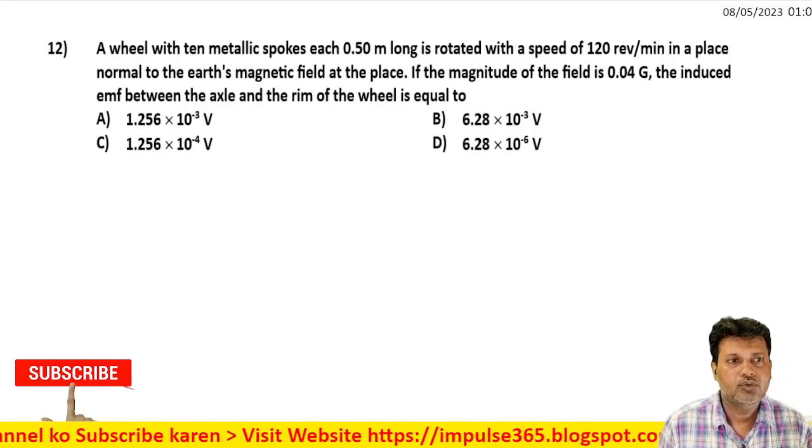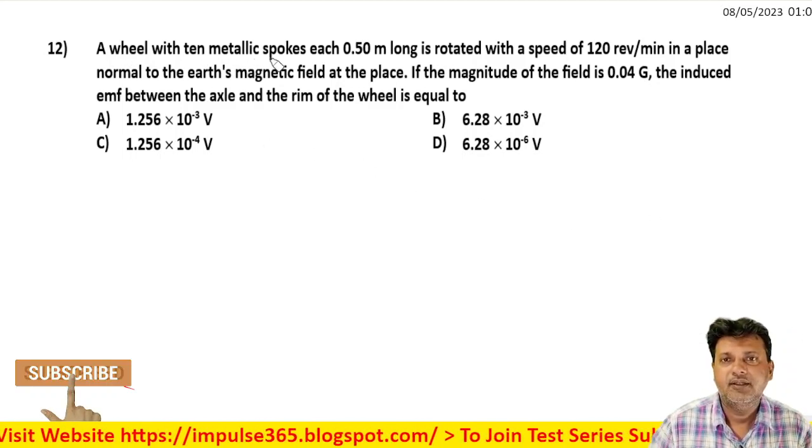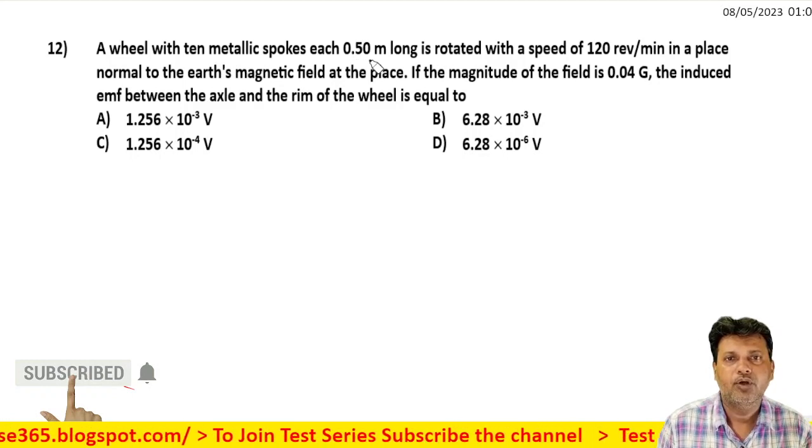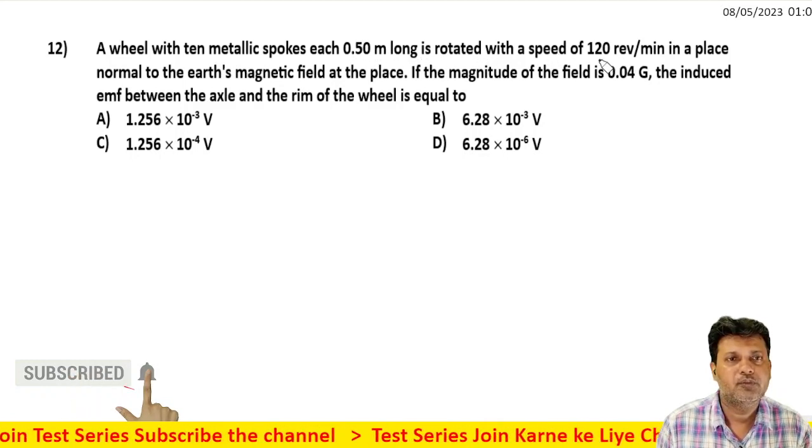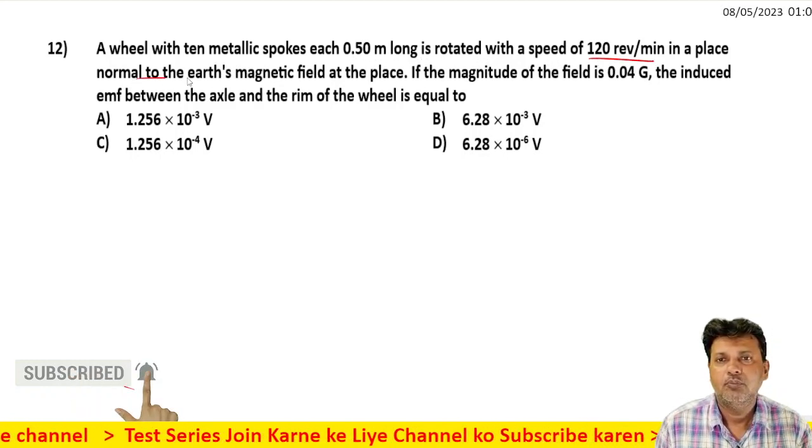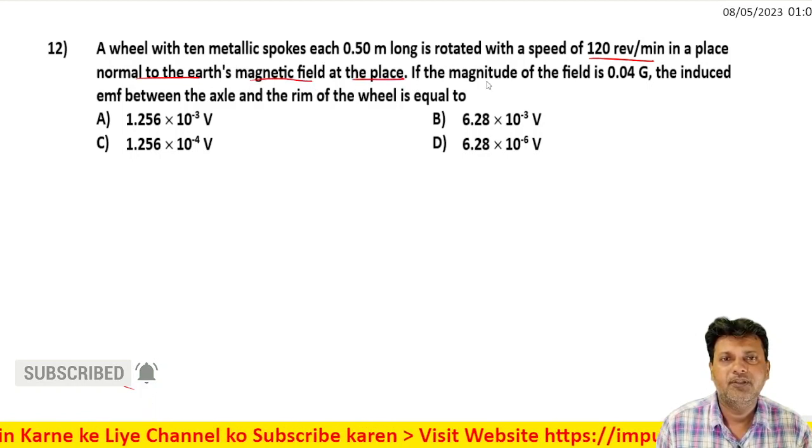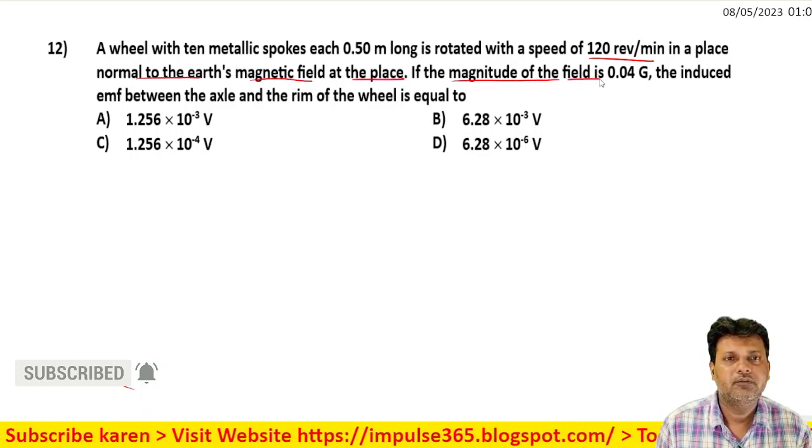Next question. A wheel with 10 metallic spokes, each 0.5 meters long, is rotated with a speed of 120 rpm in a place normal to the magnetic field. If the magnitude of the field is 0.04 gauss, then the induced EMF between the axle and the rim is to be found.